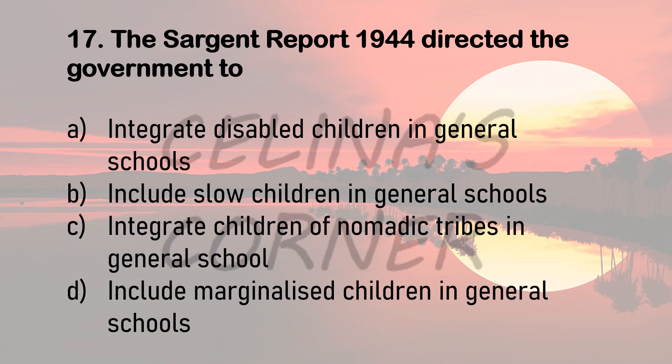Question 17. The Sargent Report 1944 directed the government to — complete the sentence. Option A: Integrate Disabled Children in General Schools. Option B: Include Slow Children in General Schools. Option C: Integrate Children of Nomadic Tribes in General Schools. Or option D: Include Marginalized Children in General Schools. Since Sargent observed the government had not done much for disabled people, in his report too he advised integrating disabled children in general schools. The correct answer is option A.